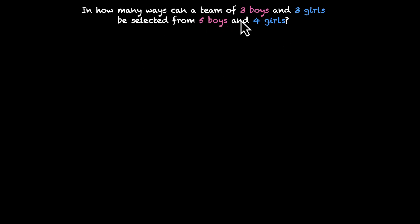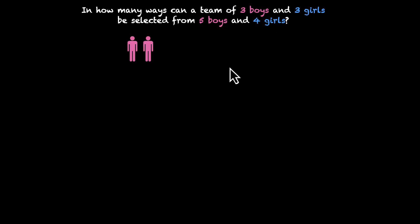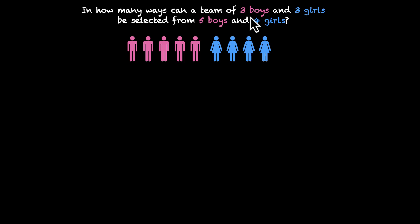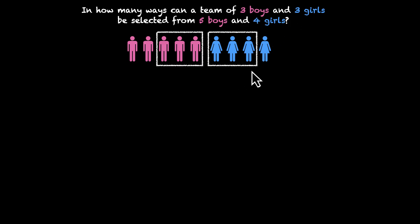In how many ways can a team of three boys and three girls be selected from five boys and four girls? So we have five boys and we have four girls. Now all boys and girls are different — they're all human beings. So we want to form a team with three boys and three girls. In how many ways can we do this?